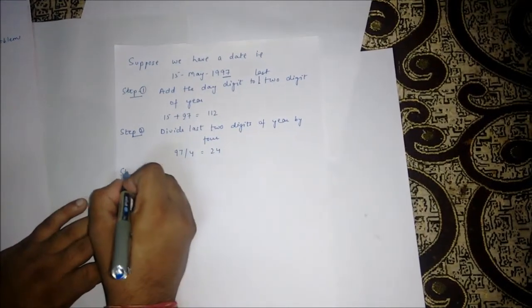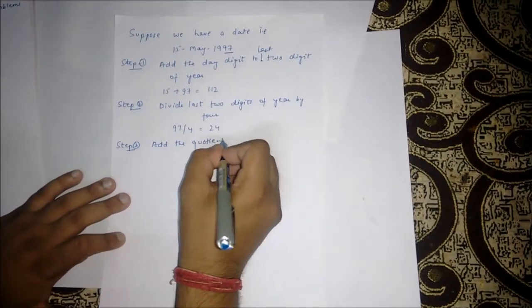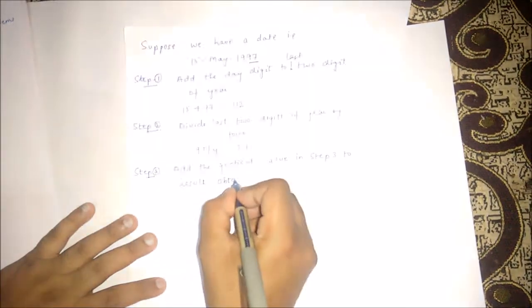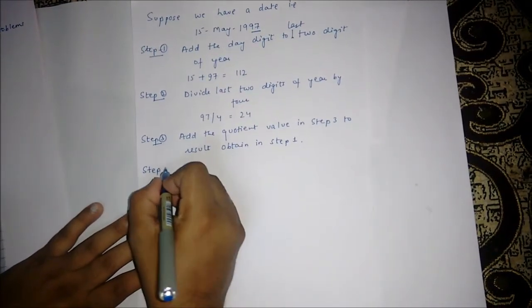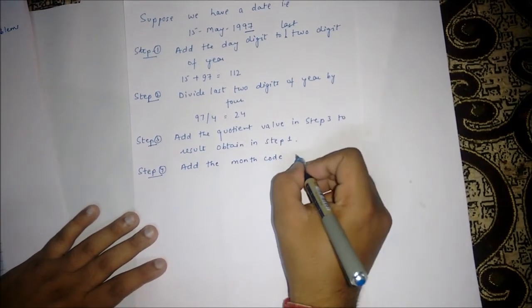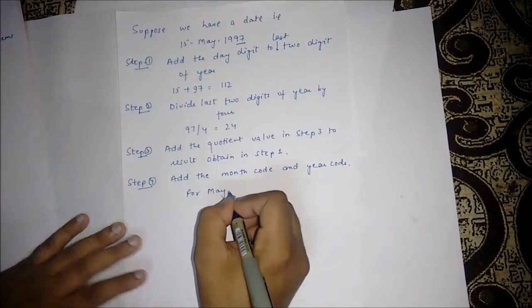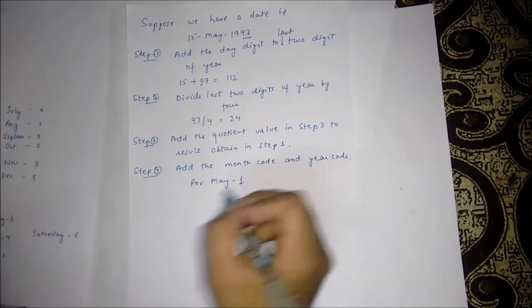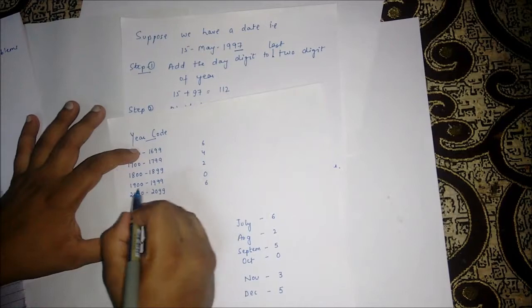Step 3 is add the quotient value to the result obtained in step 1. Step 4: add the month code and year code. For May, the code as mentioned in our chart is 1, and for year code as we mentioned in the chart is 0.